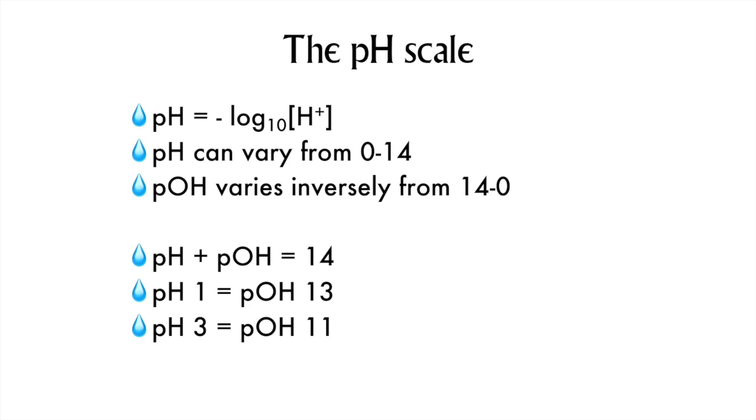This is because of the inverse relationship between these two values. Put another way, pH plus pOH is equal to 14. If pH is 1, then the pOH is 13. If pH is 3, the pOH is 11.